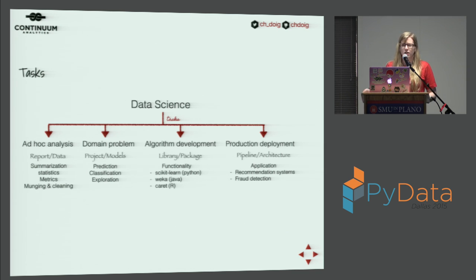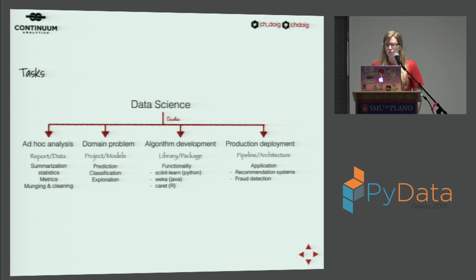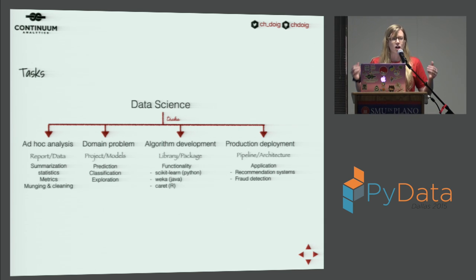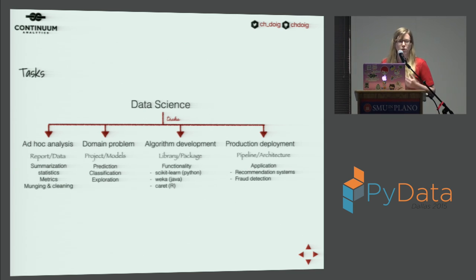Then we have algorithm development, where you output a library or package providing functionality for domain problems — like scikit-learn in Python, Weka in Java, or Caret in R. Then in data science we're also involved in production: making models available in production environments. Your output is the pipeline, the architecture, implementing those libraries and algorithms in your application. Examples include recommendation systems or fraud detection.